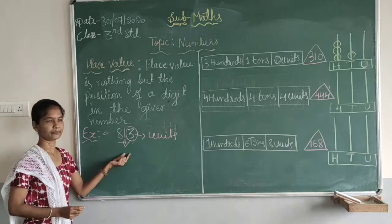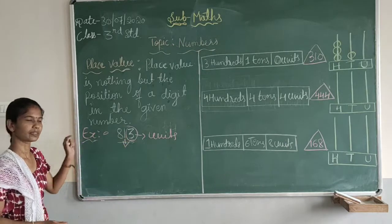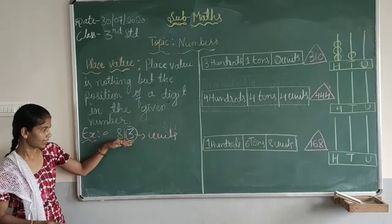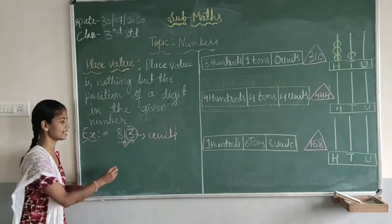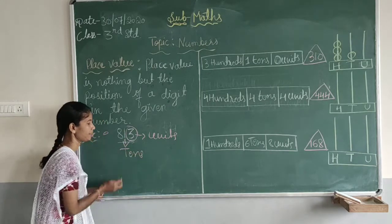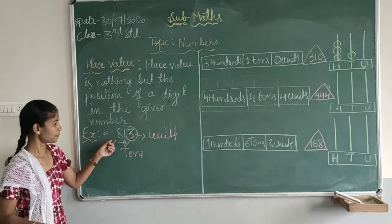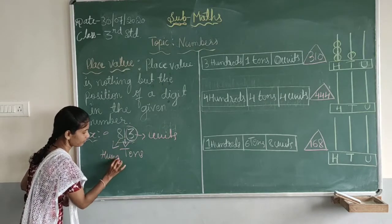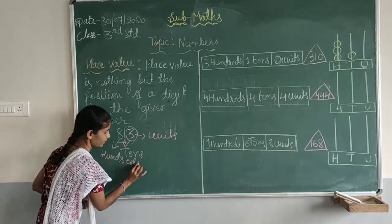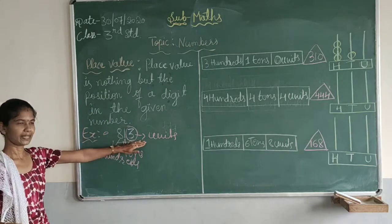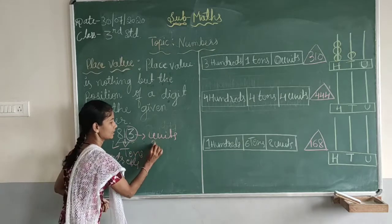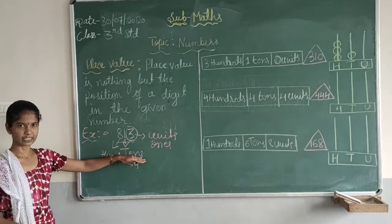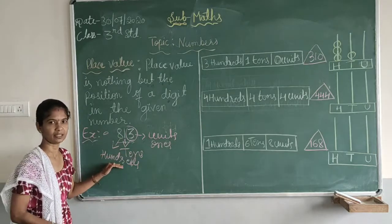Again, 1 is another digit. It is placed at the tens place. And 8 is also placed — in which position? It is in the hundreds place. So: the units place is also called the 1's place. 1 is placed at the 10's place, and 8 is placed at the 100's place.